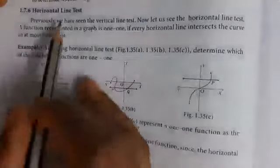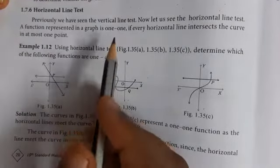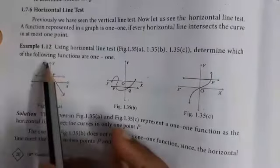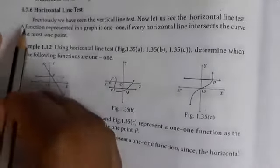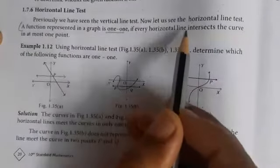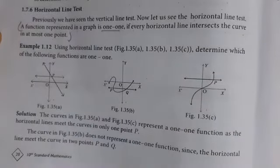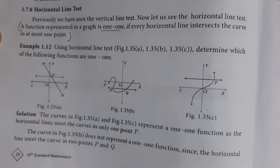Now you can see the horizontal line test. You already know about the vertical line test. Using the horizontal line test, you must find whether the function shown in the diagram is one-one or not. A function represented in the graph is one-one if every horizontal line intersects the curve in at most one point — similar to how the vertical line test works for determining if it is a function.